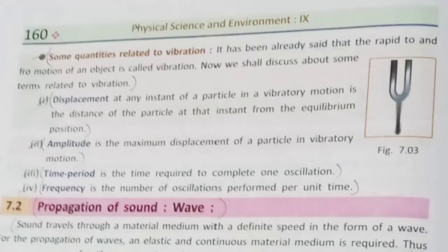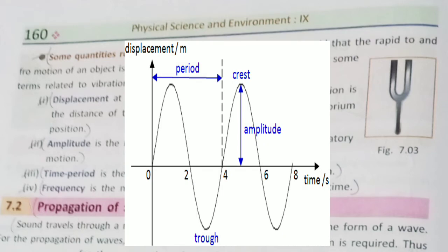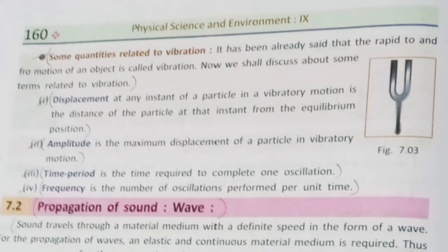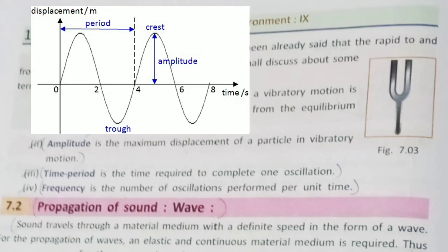Now, what quantities do we know? First of all, displacement — the displacement at any instant of a particle in vibratory motion is the distance of the particle at that instant from the equilibrium position. It has magnitude plus direction, meaning the particle is moving in a particular direction. That is displacement. Amplitude is the maximum displacement of a particle in the vibratory motion.